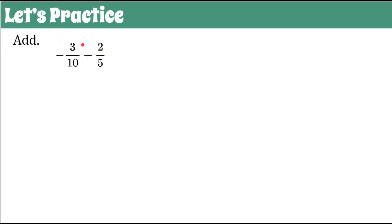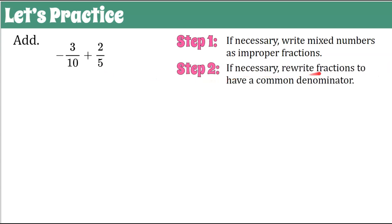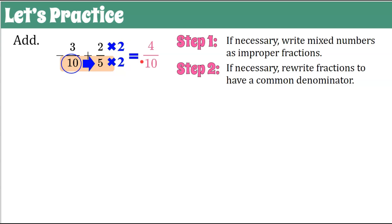We're going to add negative three-tenths and two-fifths. Step one: these are not mixed numbers, so step one is not necessary. Step two: we don't have a common denominator. We have negative three-tenths and two-fifths, so we want two-fifths to have a denominator of 10. Five is a factor of 10 — five times two is 10. What I do to the denominator I must do to the numerator: two times two is four, five times two is 10. So two-fifths and four-tenths are equivalent.